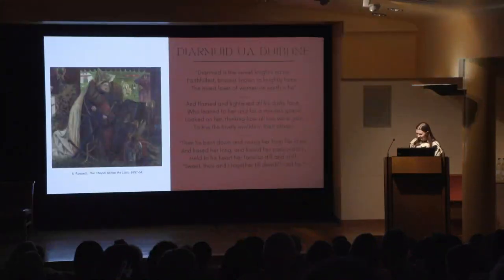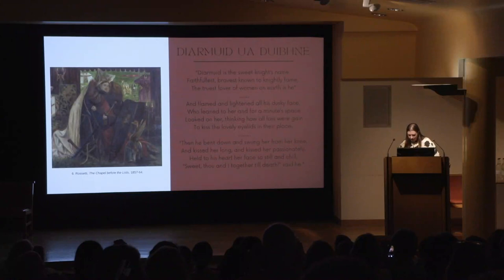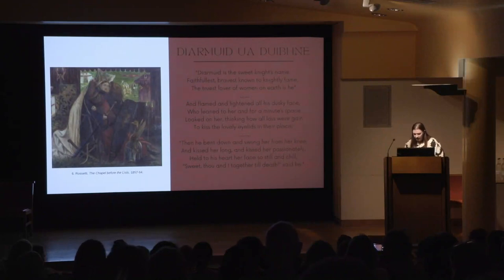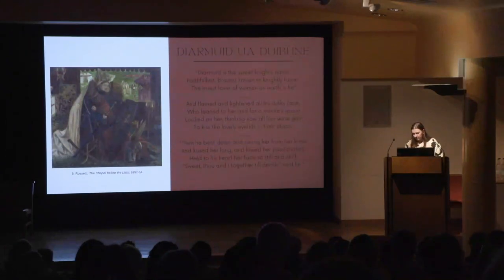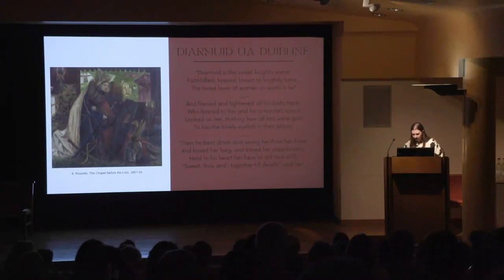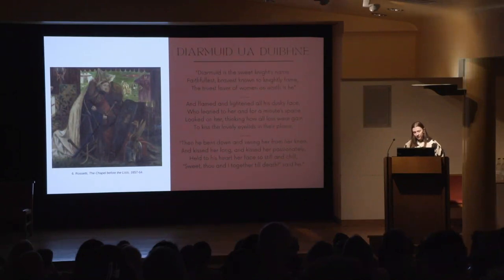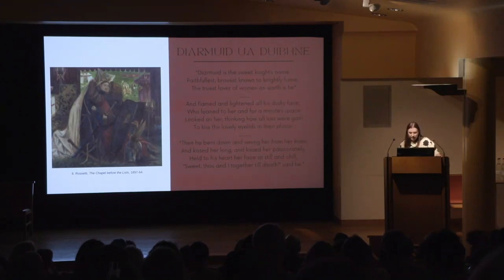Perhaps the most striking characteristic of Lancelot — one adulterer beloved by the Pre-Raphaelites — has always been how his heroism arises out of his devotion to Queen Guinevere. Matilda Tomaryn Bruckner notes that in Chrétien's 12th century French romance Lancelot et le Chevalier de la Charrette, Lancelot's love for the Queen generates an excess that benefits the entire Arthurian society. Love and prowess are not simply coordinated in terms of individual motivation for combat — love is shown to be the force that leads Lancelot to achieve his greatest triumphs.